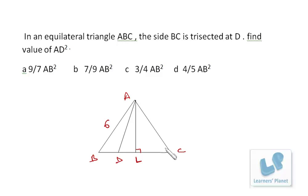Now BC is trisected at D, that means BD must be 2. BL is equal to LC, that means BL must be 3. If BD is 2 and BL is 3, then DL has to be 1.